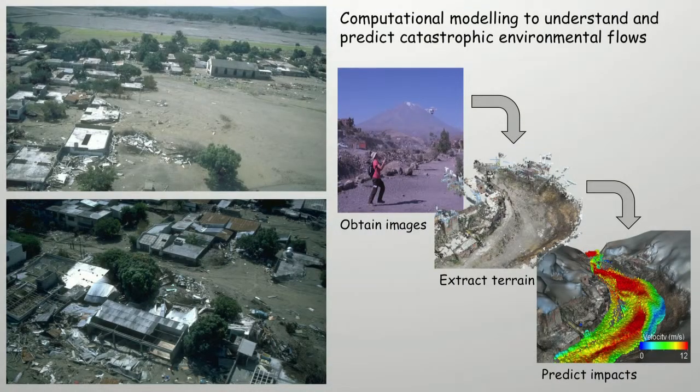In 1985, after 69 years of laying dormant, Nevado del Ruiz, a volcano in Colombia, erupted. The hot rocks and material ejected during this eruption mixed with and melted the ice from the volcano's glacier. This created several mudflows which travelled down the steep slopes of the volcano and destroyed the towns and villages at its base.